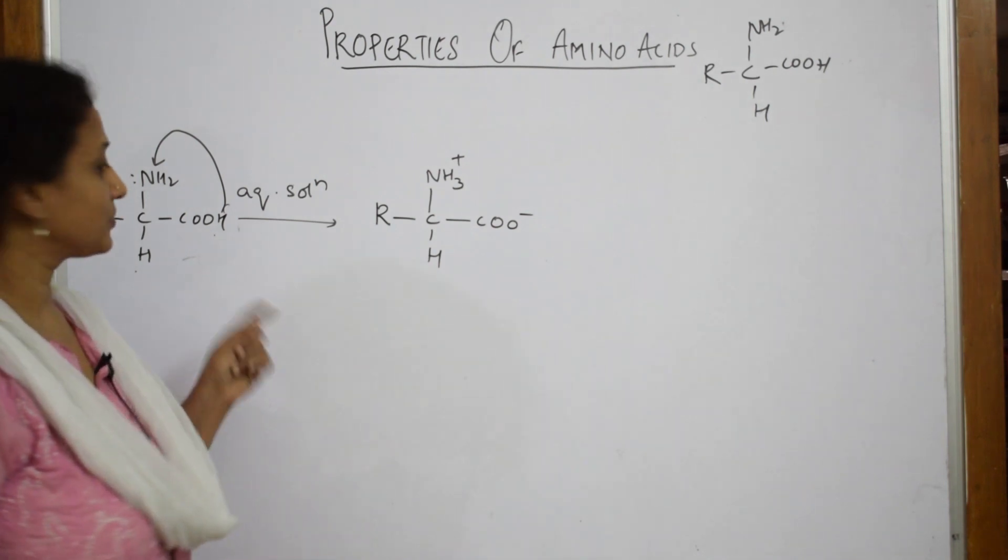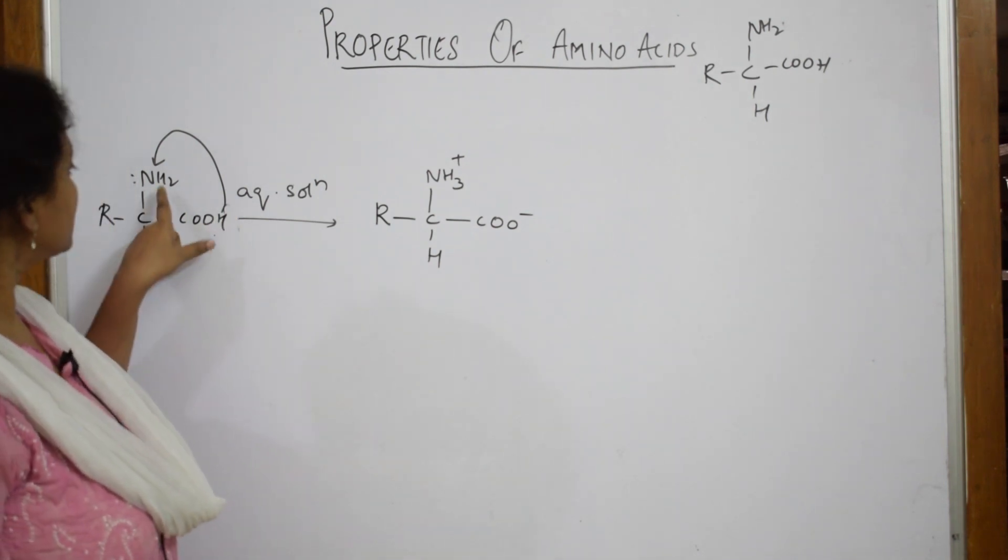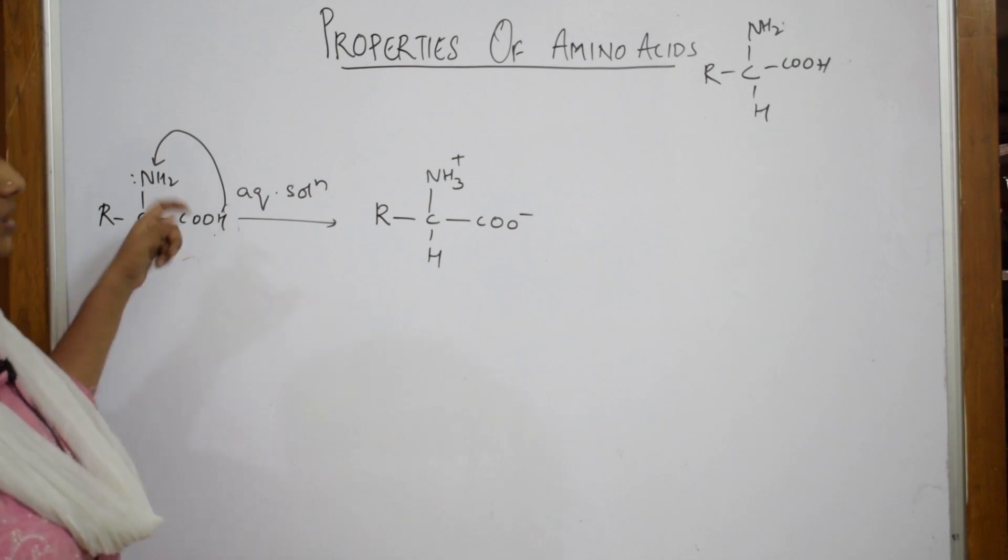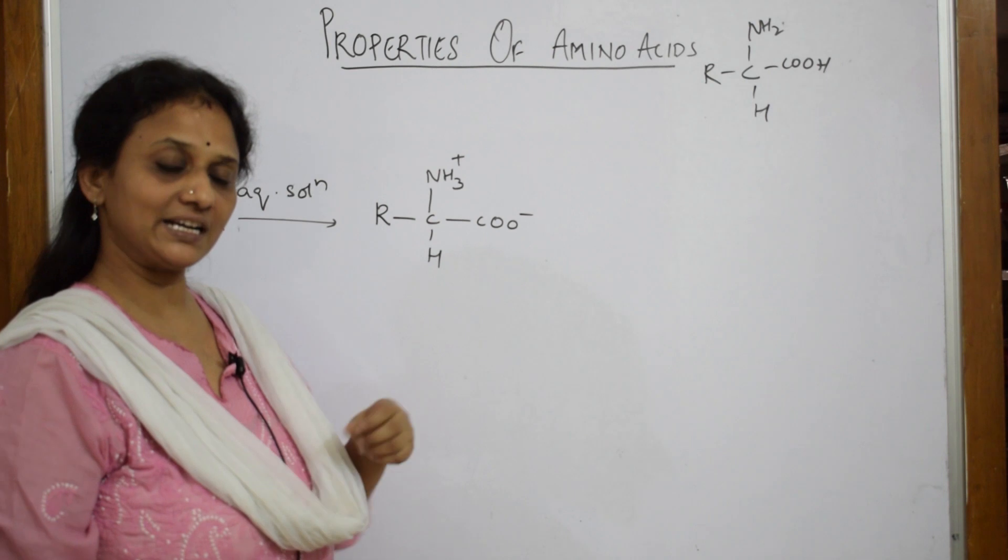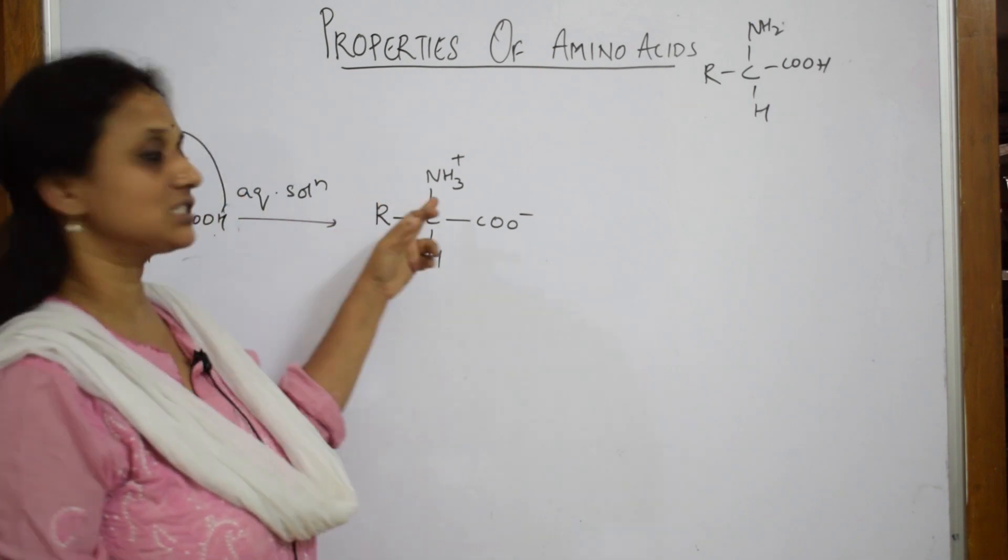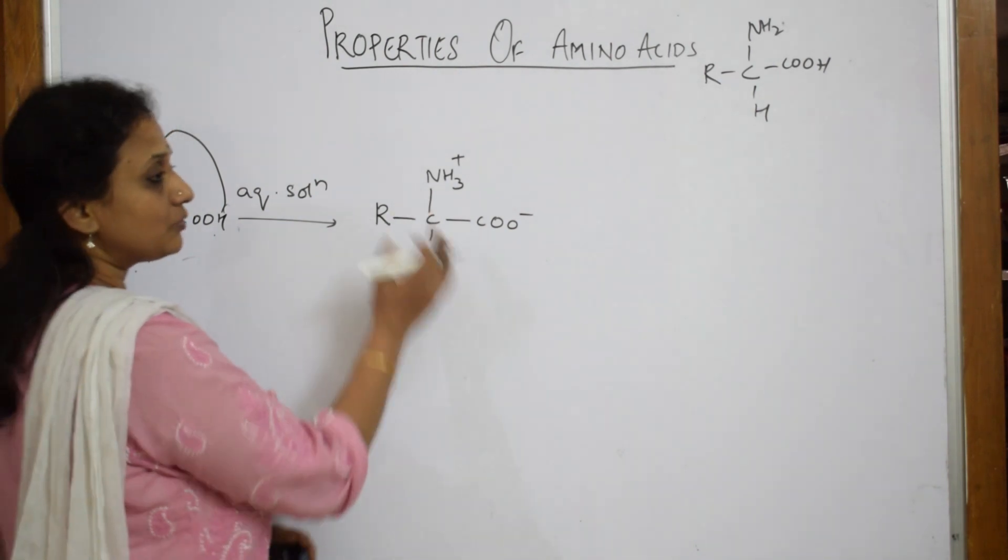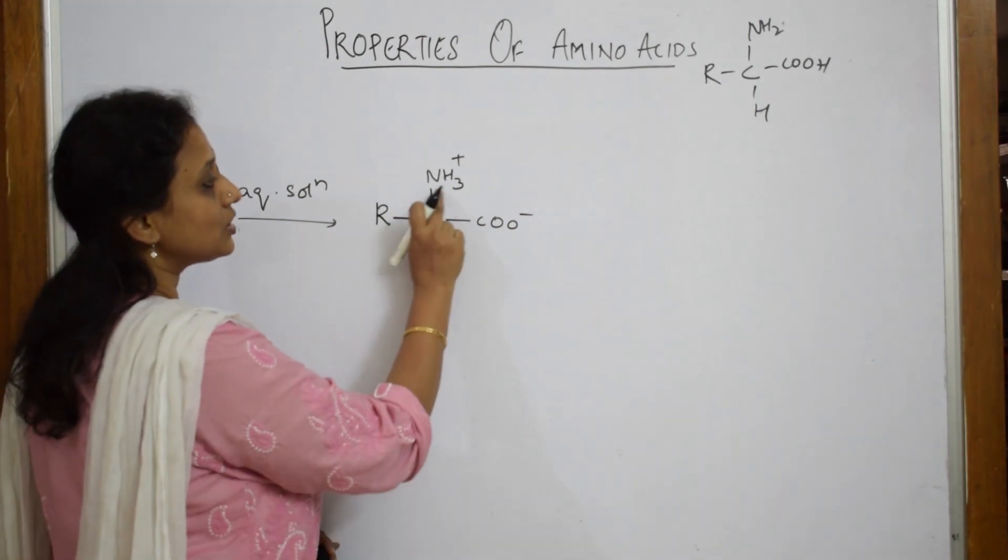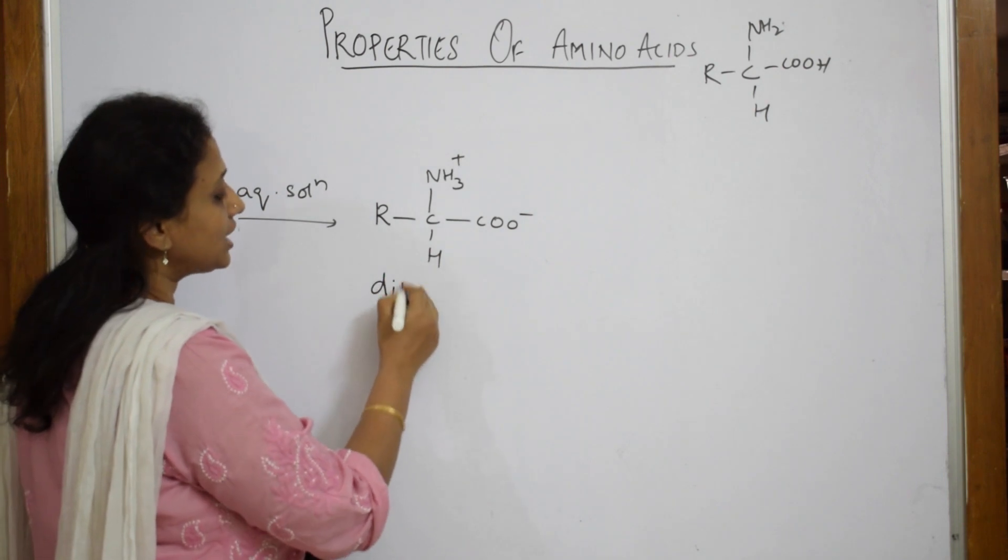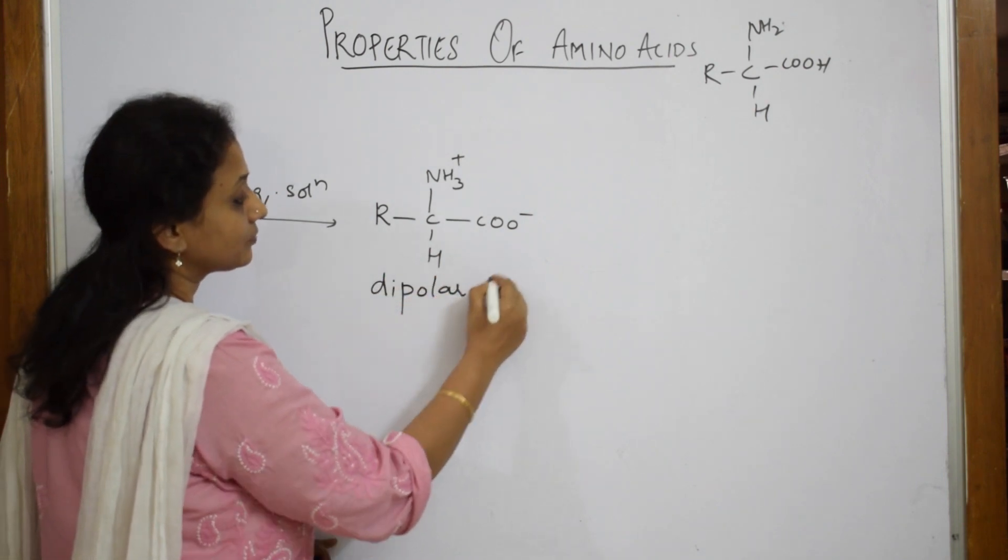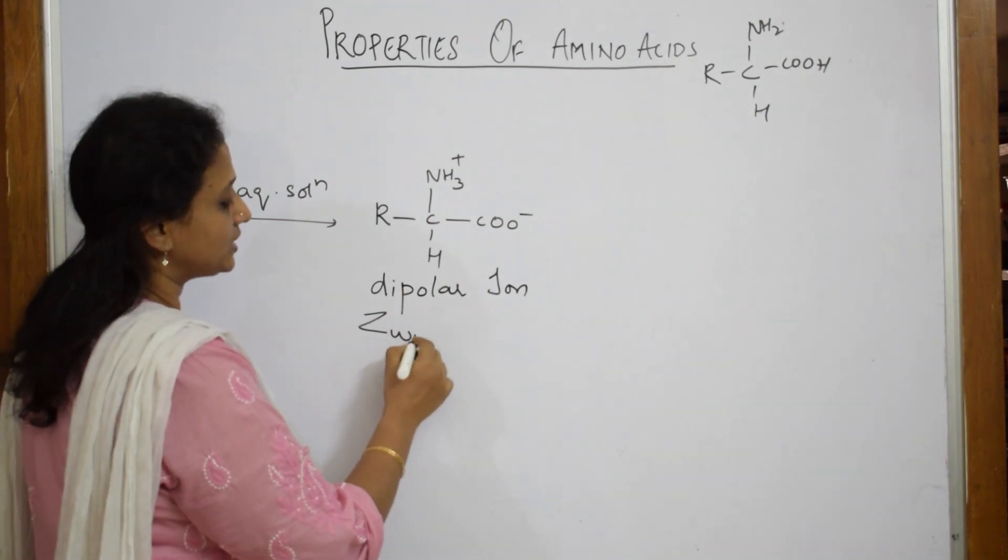In aqueous solution the proton from the acid is going to shift to the base, that is your amino group. It has become NH3 plus and this has become COO minus. Now what are you finding in this molecule? This molecule has two charges, both poles are there. This is called a dipolar ion or the other name given to this is zwitterion.